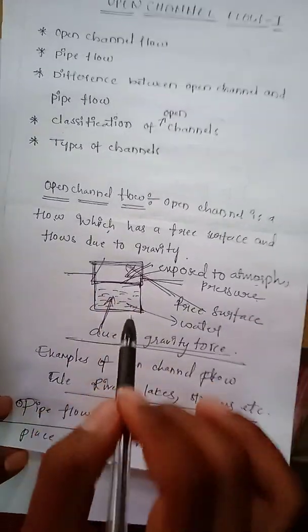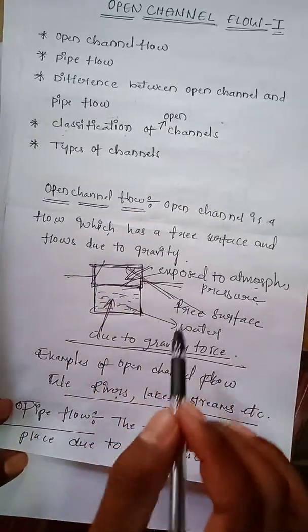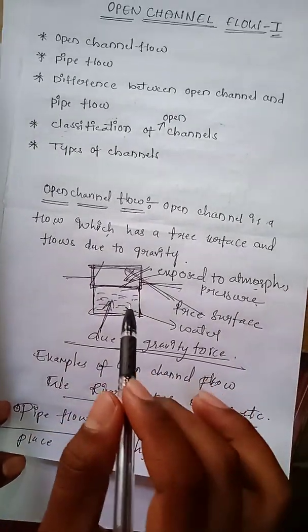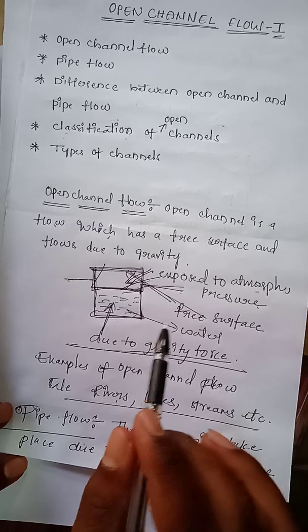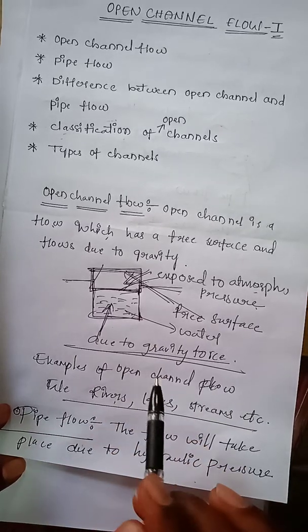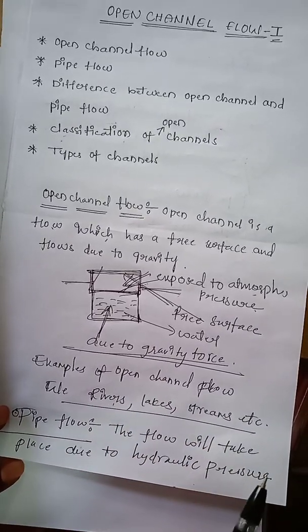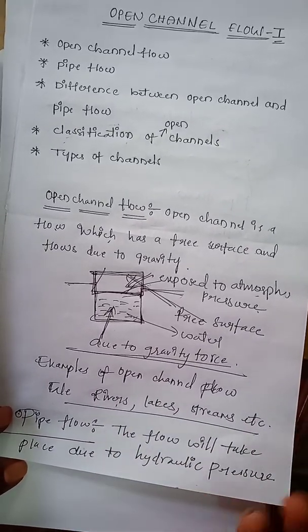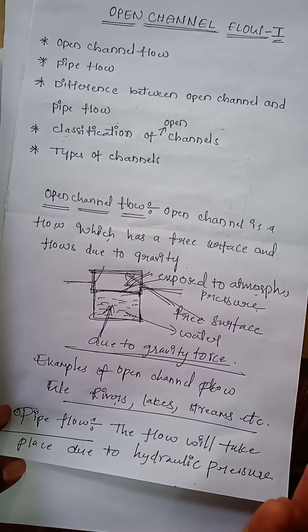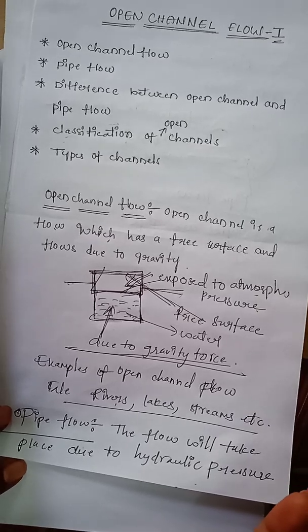This is called open channel flow, or it can be defined as the flow of water through a passage under atmospheric pressure. That pressure is called atmospheric pressure.